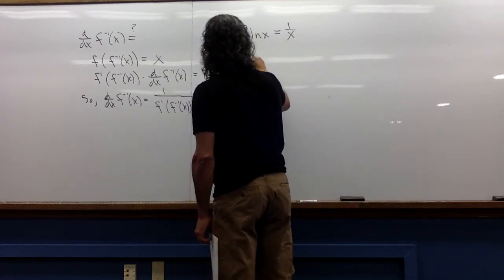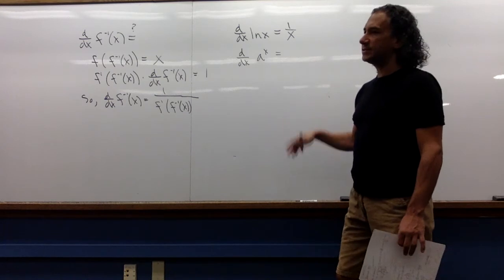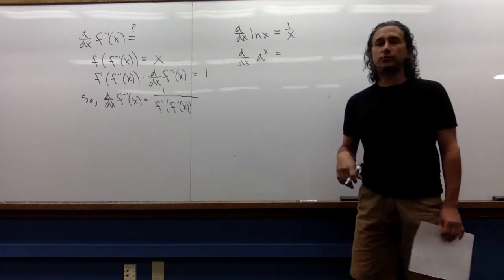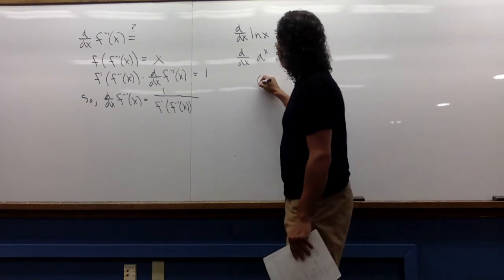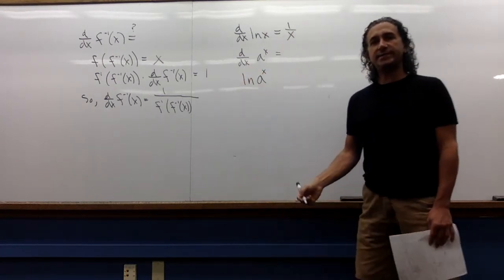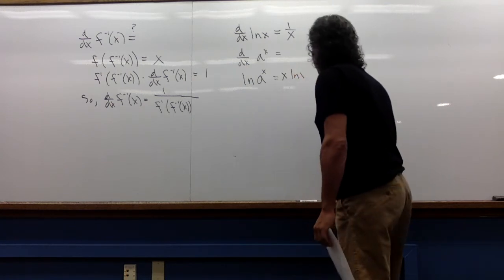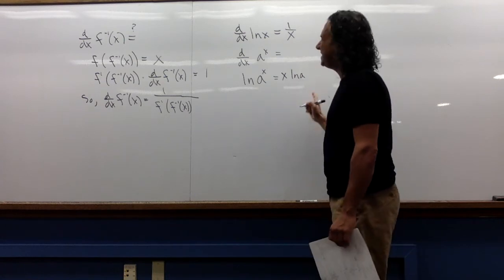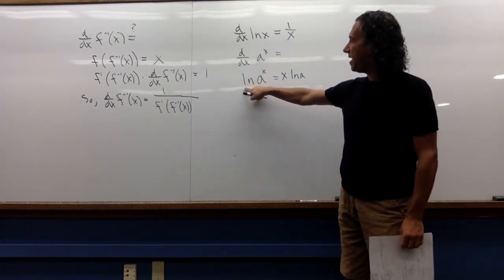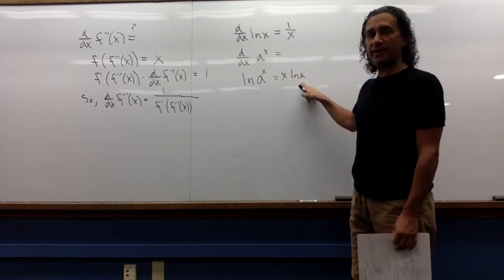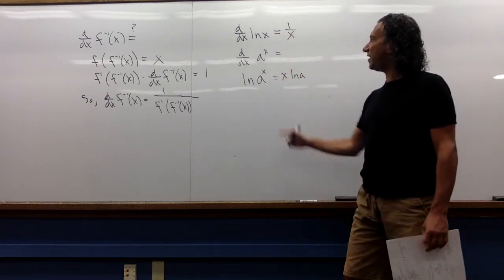Let's say I'm looking for the derivative of a to the x. We know the answer — it's a to the x times ln of a — but I never proved this particular shortcut, so let's see where that's coming from. I don't know the derivative of a to the x, but I do know the derivative of ln of stuff. And by properties of logs, ln of a to the x is x ln of a. I know this guy's derivative, I'm composing it with something whose derivative I don't know, and I know this guy's derivative. Pause the video and see if you can find the derivative of a to the x.